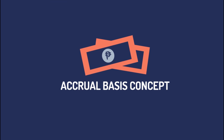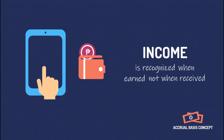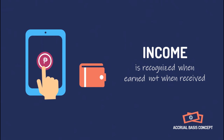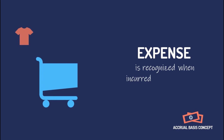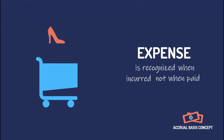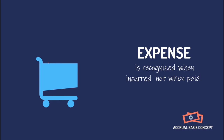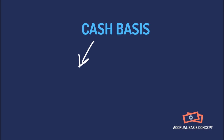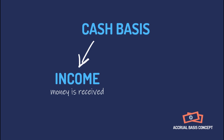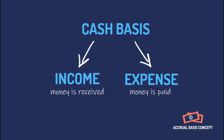Our next accounting concept is accrual basis. This means that income is recognized when earned, not when received. The company can already record an income once it delivers the product or performs the services, even if it hasn't received any cash yet. Expenses, on the other hand, are recognized when incurred, not when paid — meaning the company has to record an expense once they are able to use up something or receive a service, even if they haven't paid for it yet. We also need to remember that accrual basis is the opposite of cash basis. Under cash basis, companies only recognize income when money was already received and recognize expense when money was already paid.